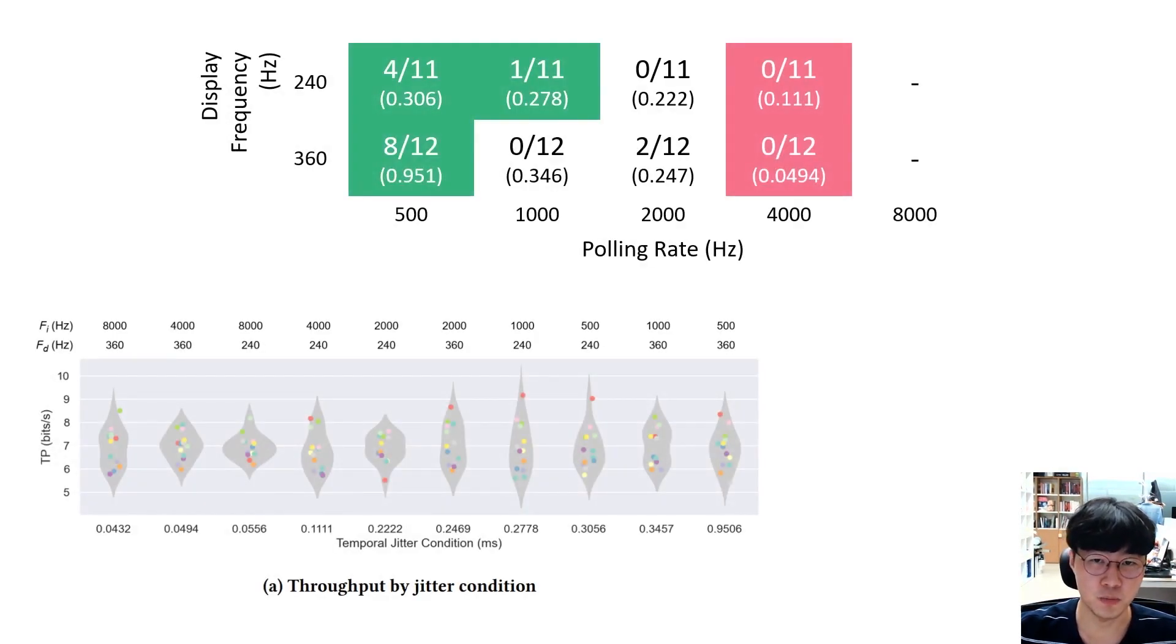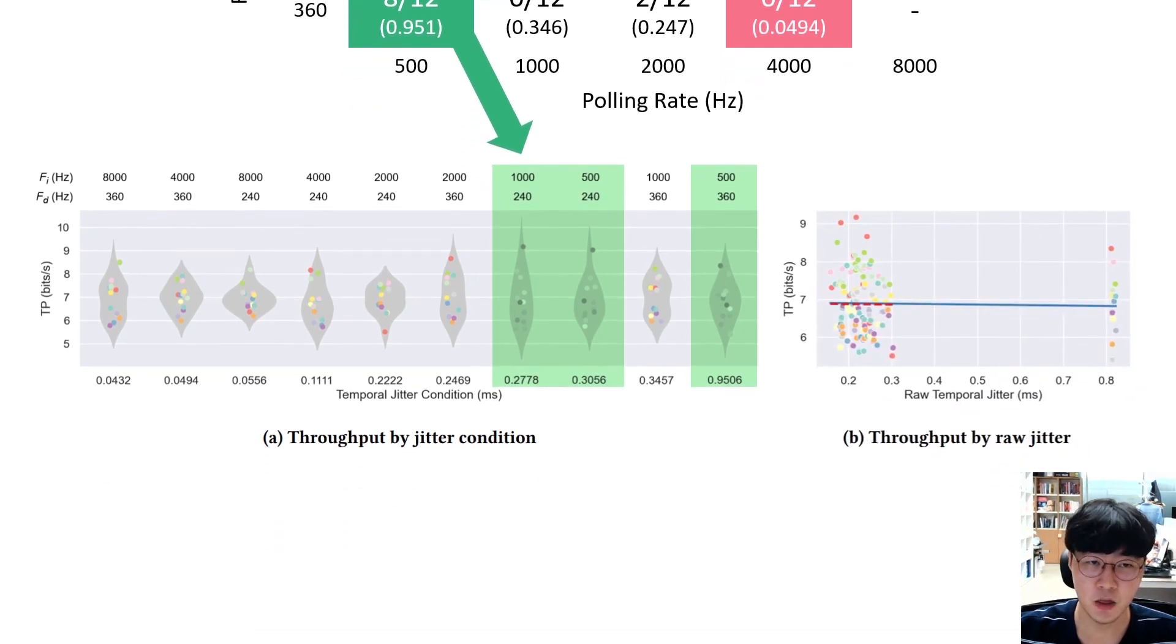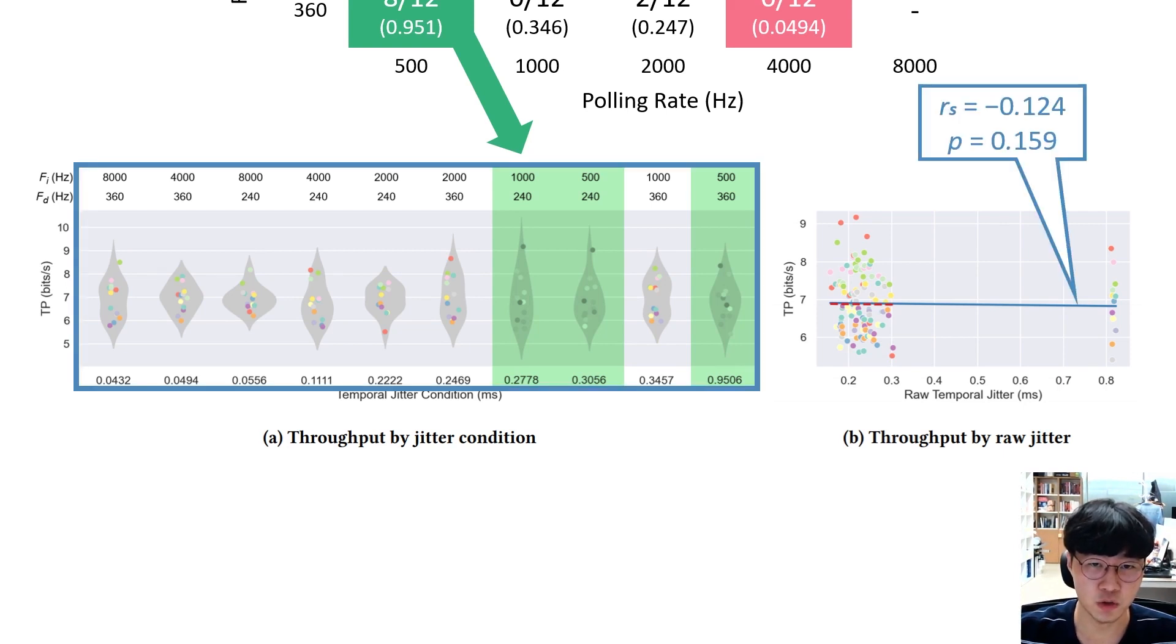Figure below illustrates the mean throughputs of each participant under each condition. A two-factor repeated measures ANOVA showed that polling rate, display frequency and their interaction did not have any significant main effect on the pointing performance in the throughput. We also conducted linear regression analysis of the jitter size and the throughput. The blue solid line illustrates the Spearman correlation between the throughput and the median raw temporal jitter, whereas the red dashed line shows their Spearman correlation without the worst jitter condition. The results indicate a very weak negative correlation between the jitter and the throughput, but this amount was not statistically significant.